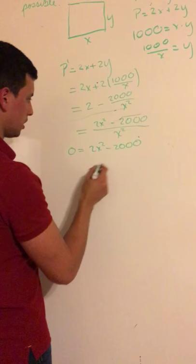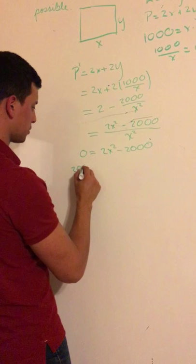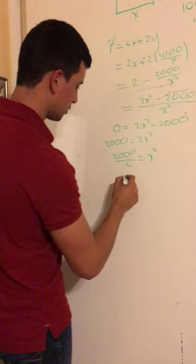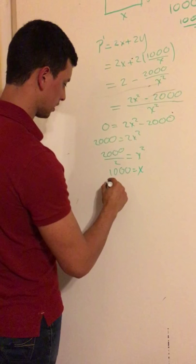Here you add 2000 to both sides. So you have 2000 equals 2x squared. Divide by 2, and then you have x squared equals 1000. So the square root of 1000 equals x.